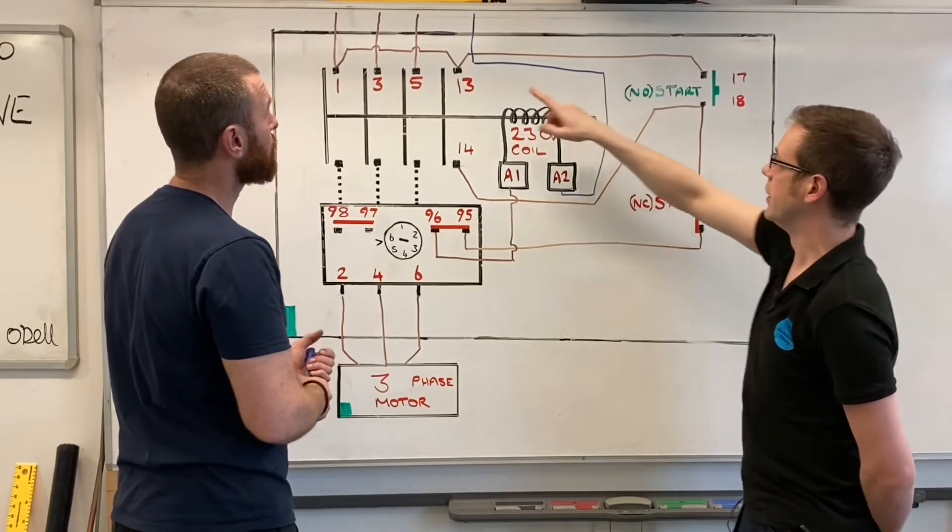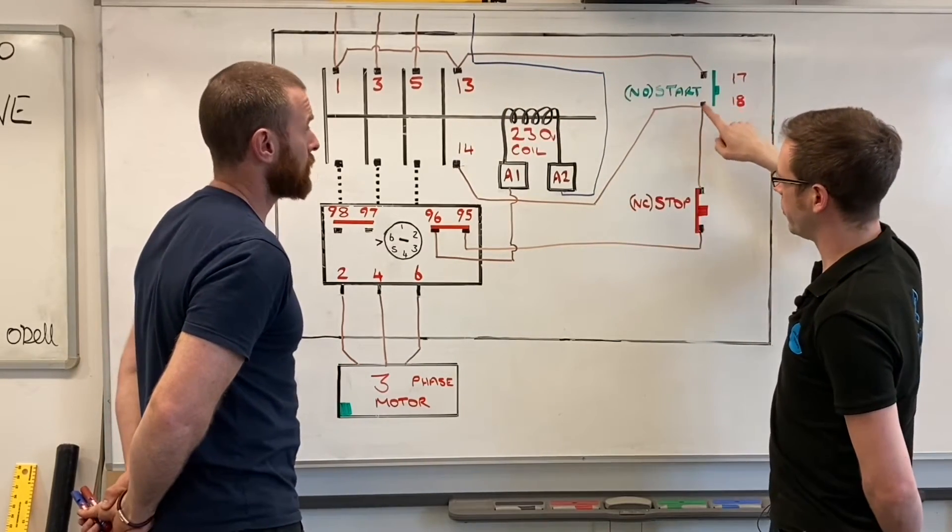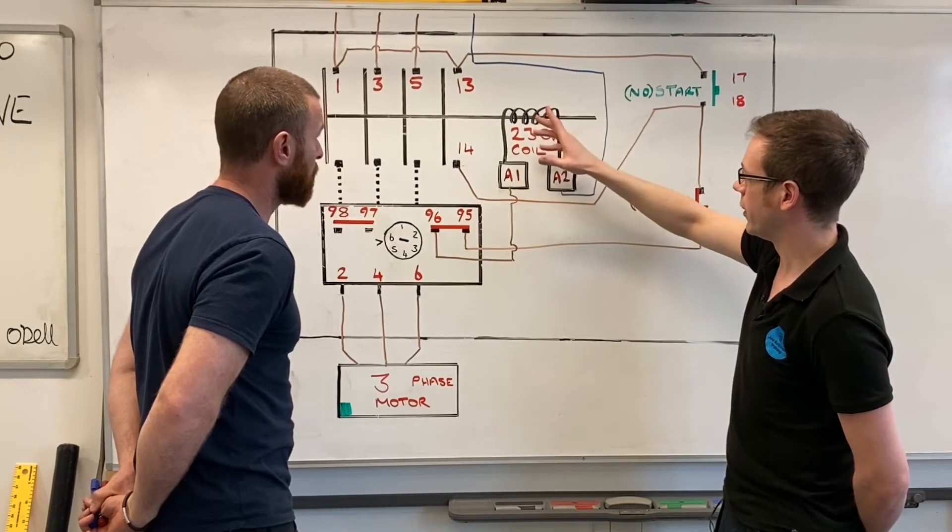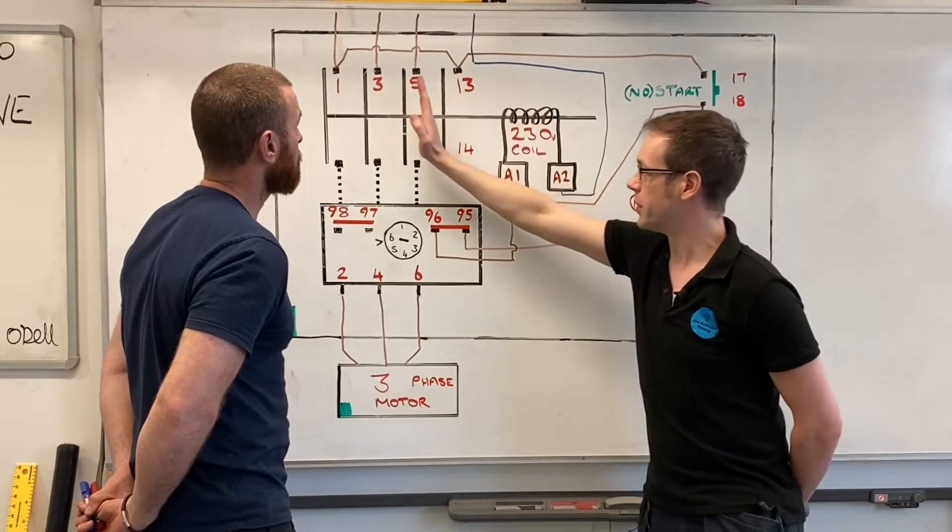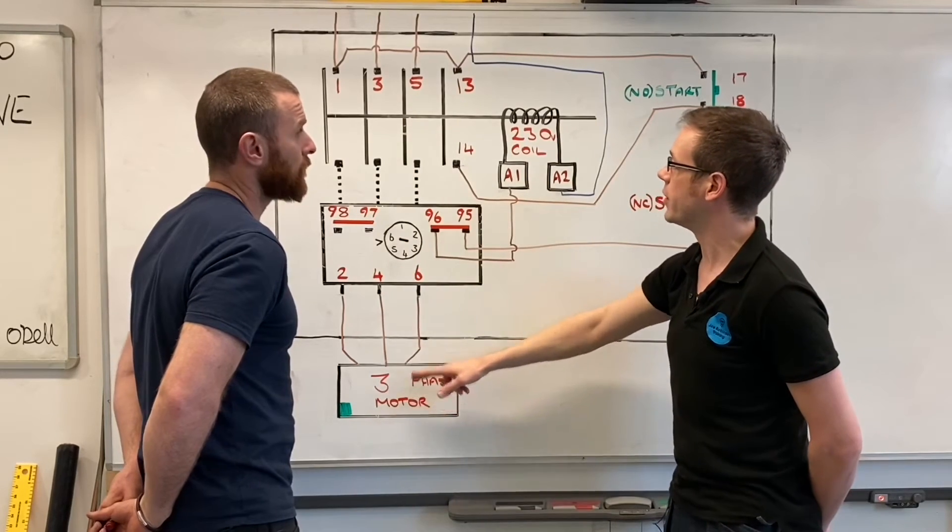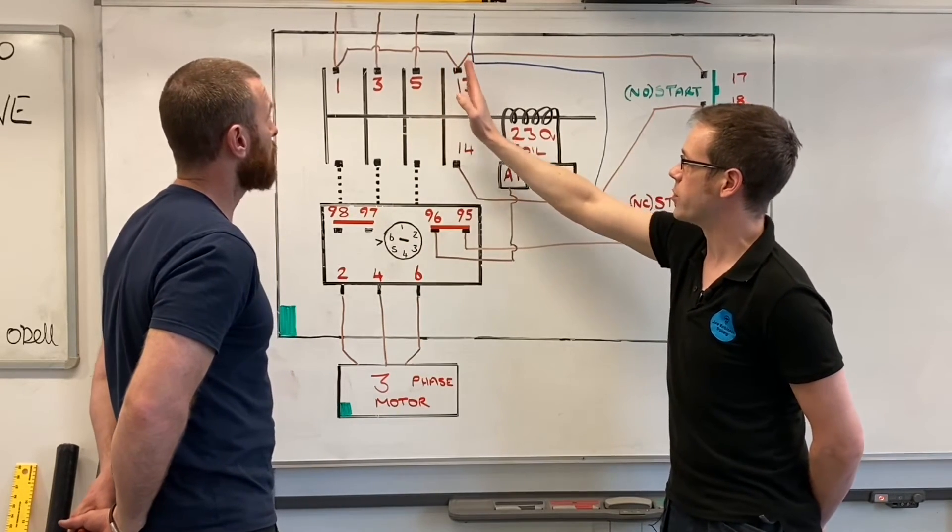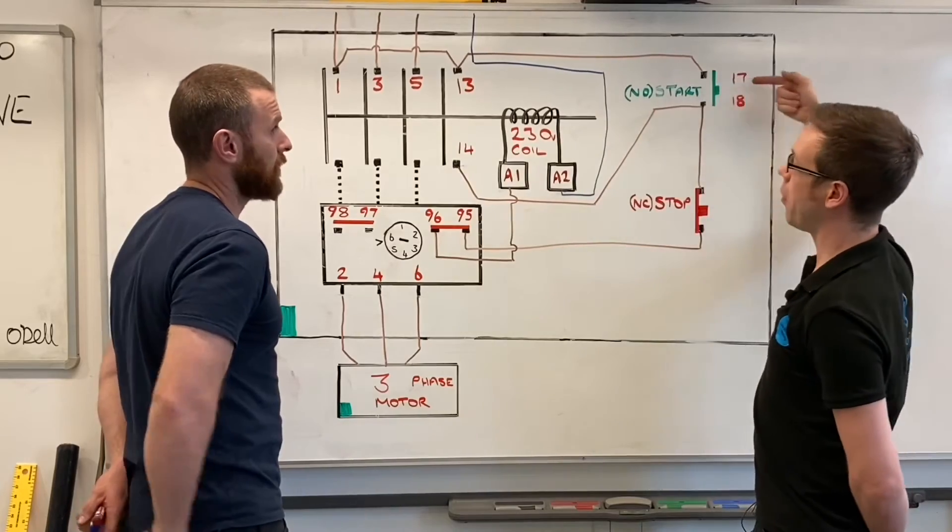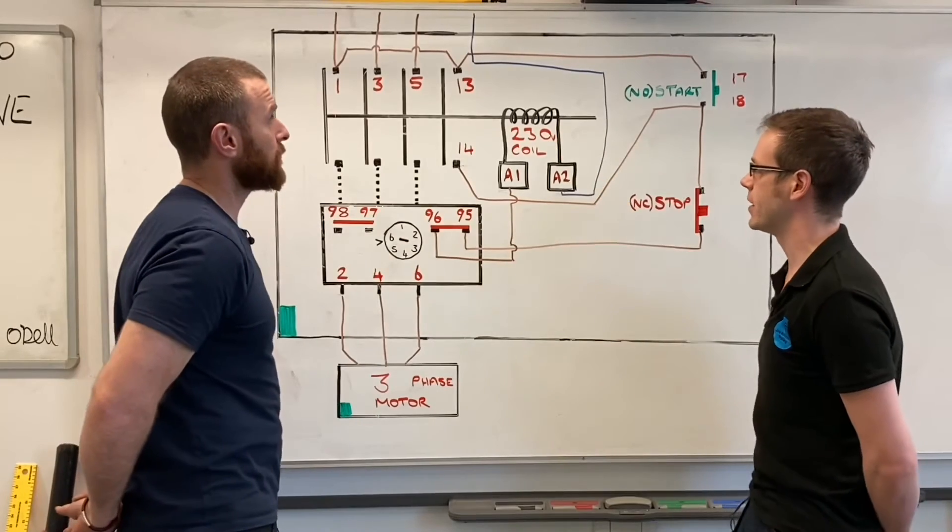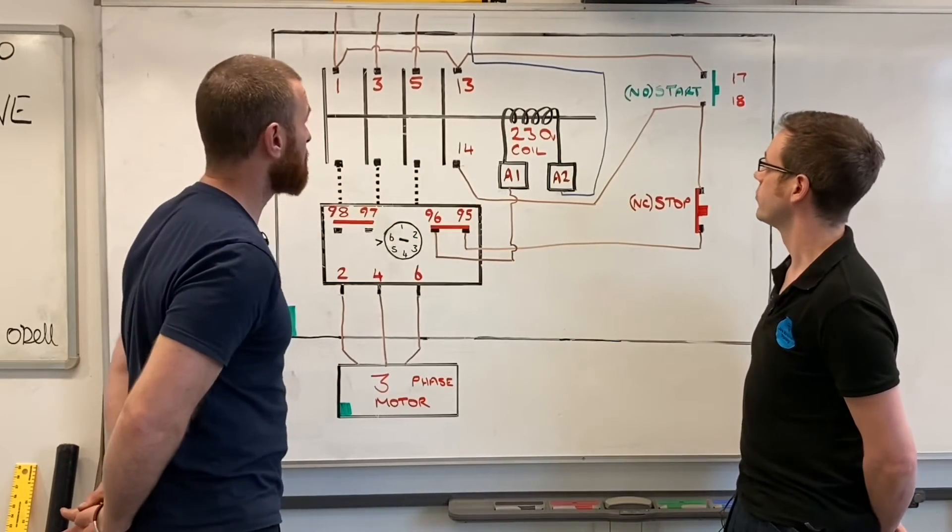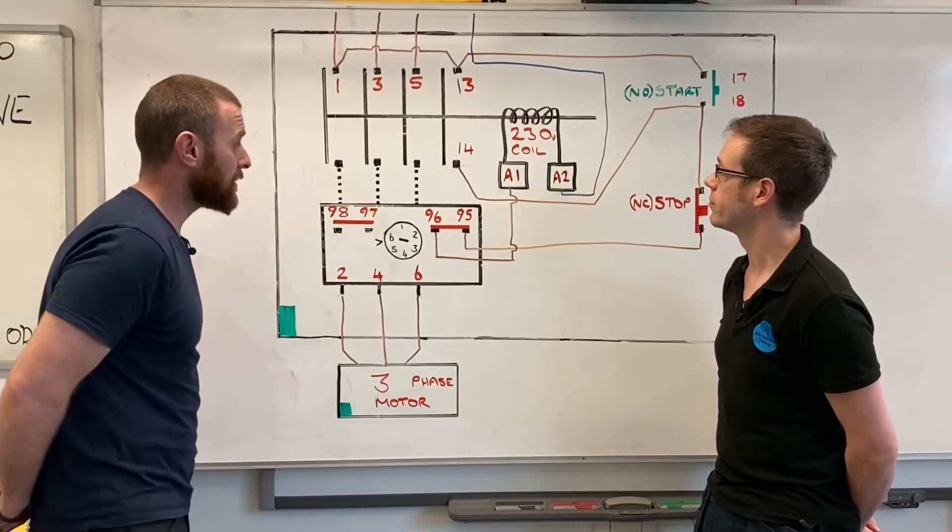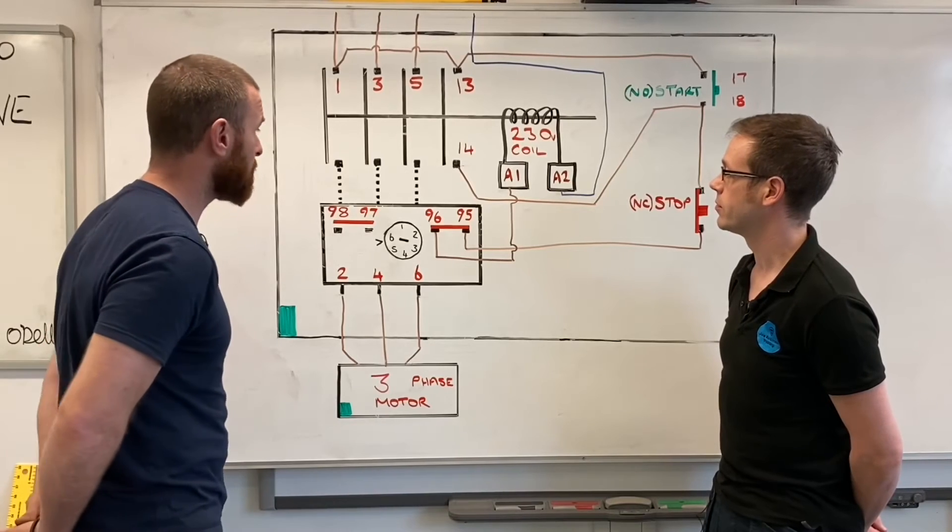We've got that circuit completed and we're seeing that same principle that we saw before. If I press the start button, I create a path that the current can flow through up to A1, bringing my coil in. When the coil comes in, these shoot over making contact not only to the motor which will then be energized, but also between terminals 13 and 14. When I take my finger off the button, current can then flow back through the circuit again, basically bypassing the start button. That's basically the three phase circuit for a direct online starter.